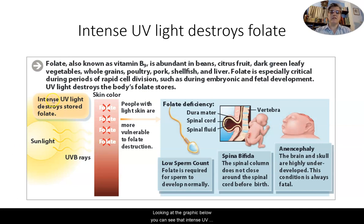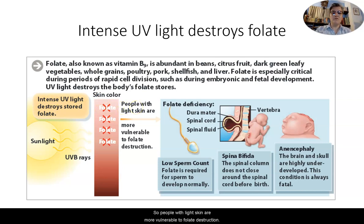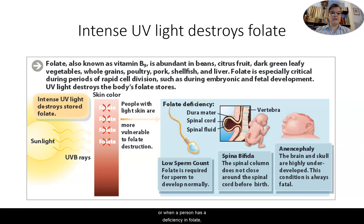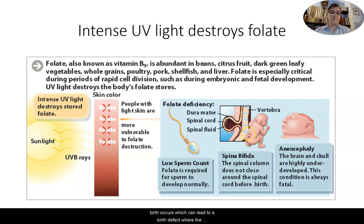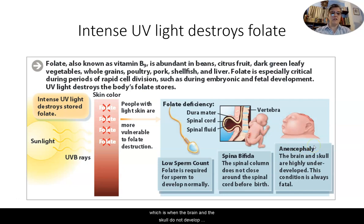Looking at the graphic, you can see that intense UV light destroys stored folate, and people with light skin are more vulnerable to folate destruction. A deficiency in folate can cause low sperm count, because folate is necessary for sperm to develop normally. In utero, a folate deficiency can lead to spina bifida — where the spinal column does not fully close around the spinal cord before birth, leaving the spinal cord exposed — as well as anencephaly, where the brain and skull do not develop properly, which is always a fatal condition.